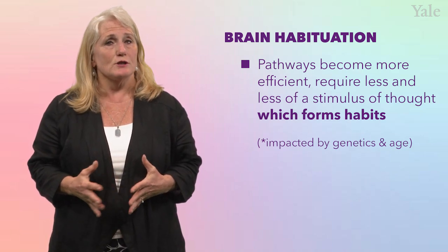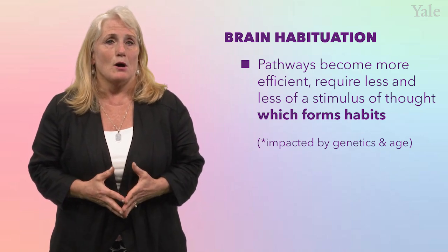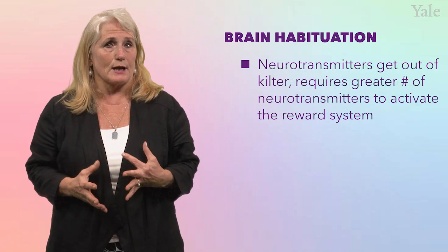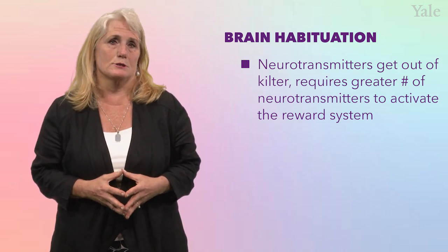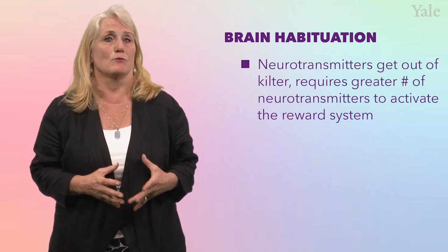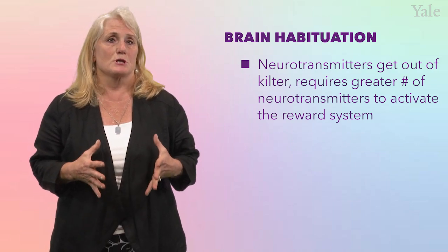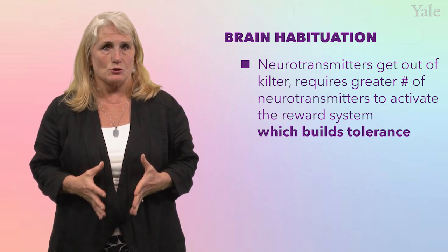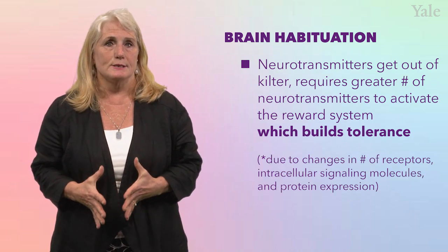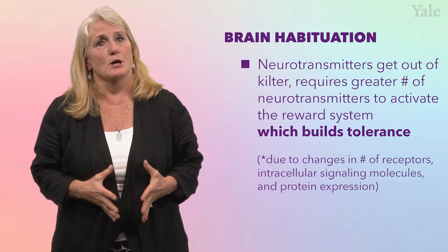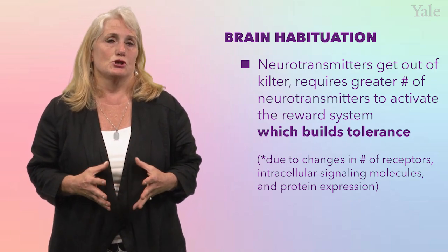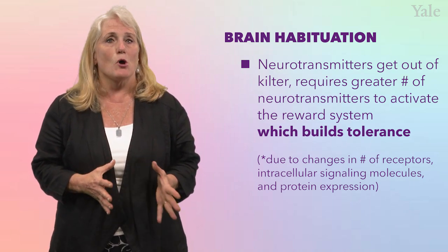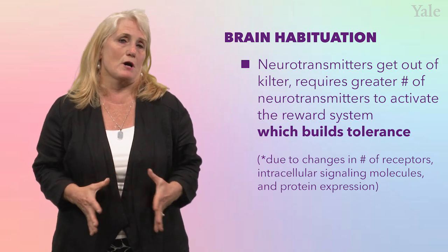The time it takes to achieve habituation varies with the kind of drug. Ultimately, the distribution of neurotransmitters gets all out of kilter. A person who chronically uses a substance now requires a greater amount of neurotransmitters to activate the reward system — this is what is termed tolerance. Studies on animals and humans show that repeated habitual use changes the number and density of receptors for addictive drugs, which is why tolerance develops, and also changes intracellular signaling molecules and protein expression in ways that are long-term — which explains the persistent craving that follows withdrawal.